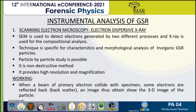Now for the instrumental analysis of GSR. The first is the scanning electron microscope with energy dispersive X-ray analysis (SEM-EDX). This is used to detect electrons generated by two different processes, and X-ray is used for compositional analysis. It is a combination of two microscopes and is a non-destructive method. It is commonly used for the examination of GSR because it has high resolution and magnification. When a beam of primary electrons collides with the specimen, some electrons are reflected back, producing a 3D image of the particle.